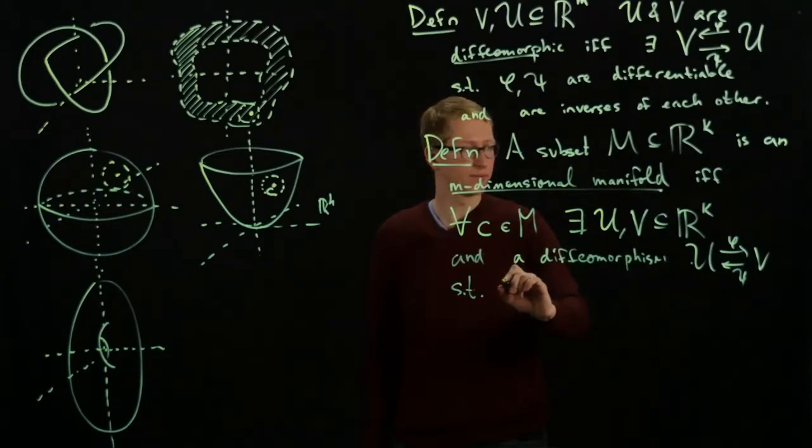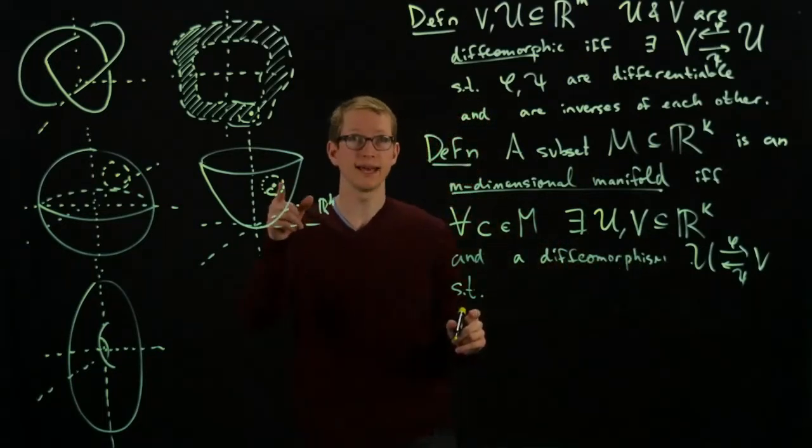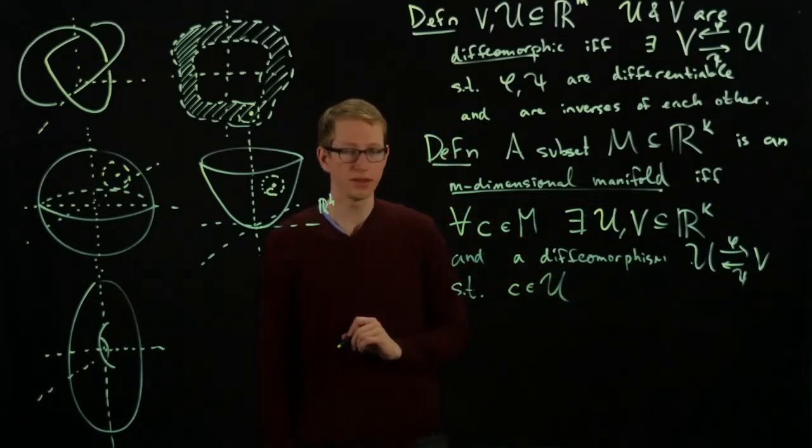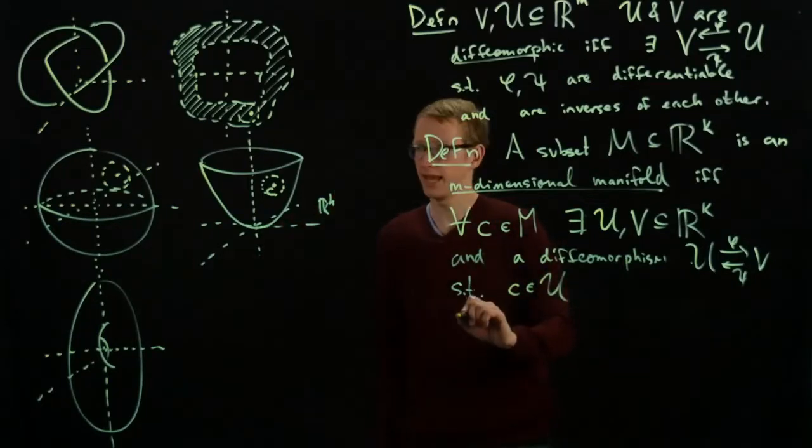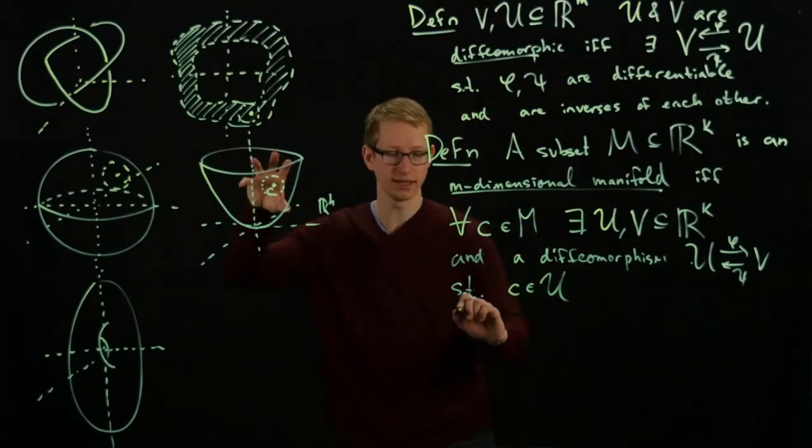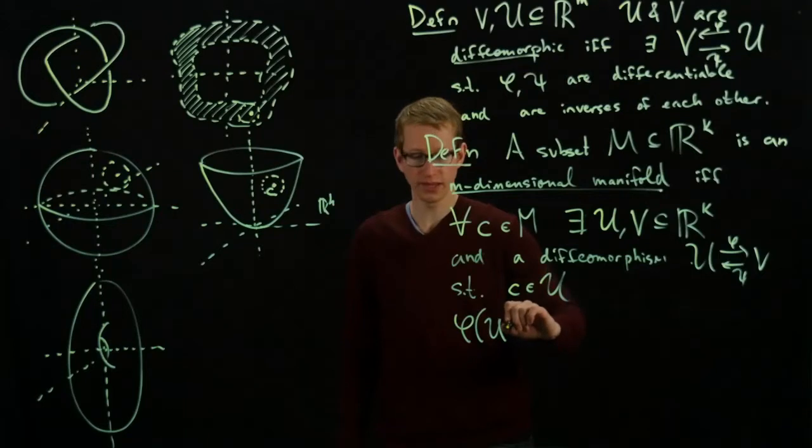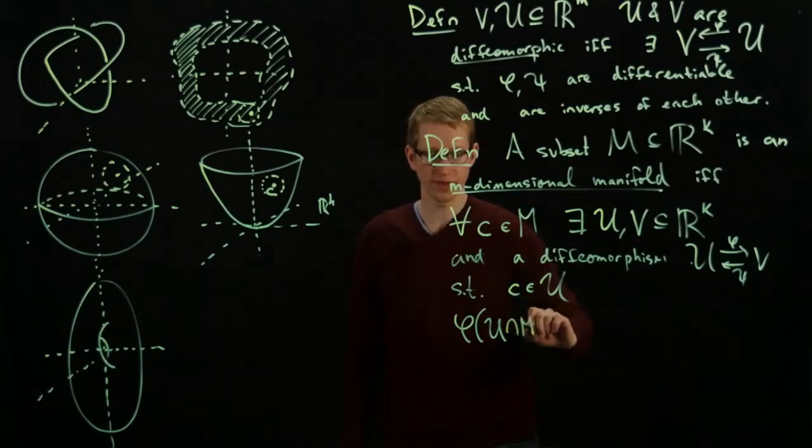So we want a diffeomorphism satisfying the condition that, first of all, C has to be in U. That's the first condition we need. Secondly, if we take the image of our open set here, so phi of U, and then we intersect it with M,